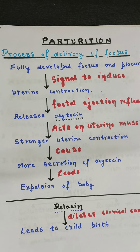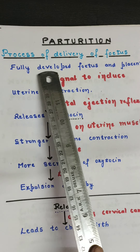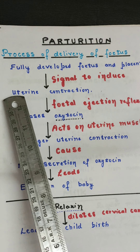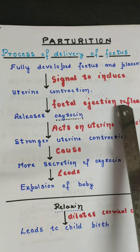Parturition is controlled by different hormones, and I have made a flowchart so it will be easy to understand. When the full gestation period is complete, the fully developed fetus and placenta induce signals. This causes the uterine muscles — specifically the myometrium — to start contracting, and this is known as the fetal ejection reflex.